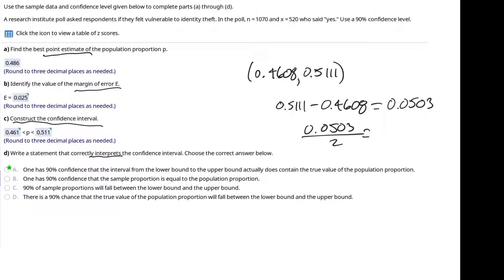divided by two, will give us 0.02515. So rounding our margin of error to three decimal places would give us 0.025.